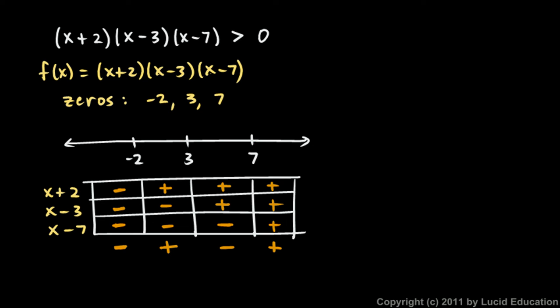We can graph the solution on a number line. From negative 2 to 3 we use parentheses because this is not greater than or equal to — not including negative 2 and 3 — and then all numbers greater than 7, not including 7. Written algebraically: negative 2 < x < 3, or x > 7. All numbers in those regions satisfy the original inequality.